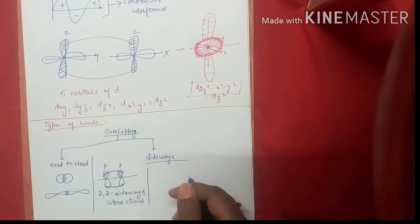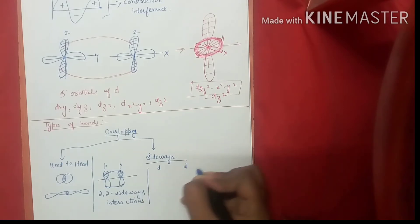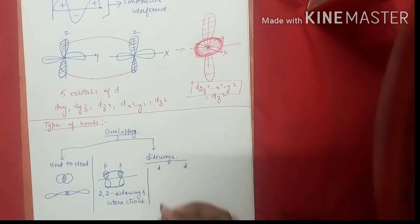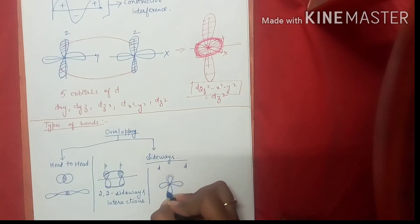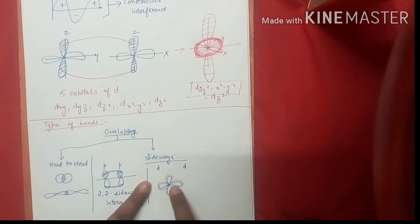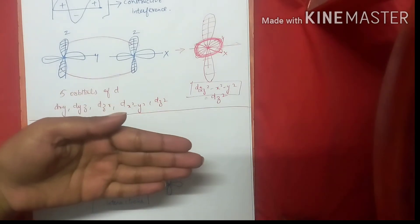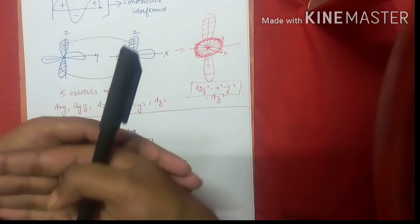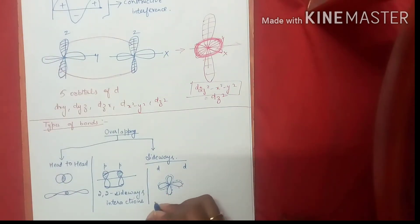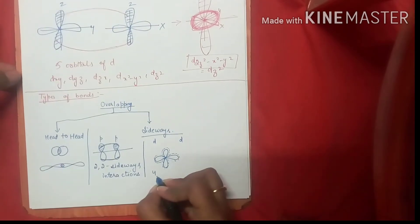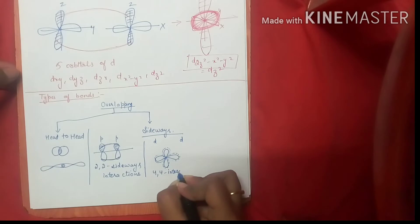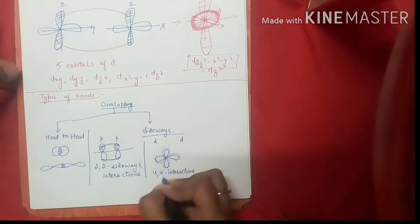Next, if d-d interactions take place — if both orbitals interacting are d orbitals — suppose this is one d orbital and it overlaps sideways with another d orbital. One d orbital is in one plane and the other d orbital is below it, both overlapped sideways. These are called 4-4 interactions, and the bond formed by 4-4 interactions is called your Delta bond.